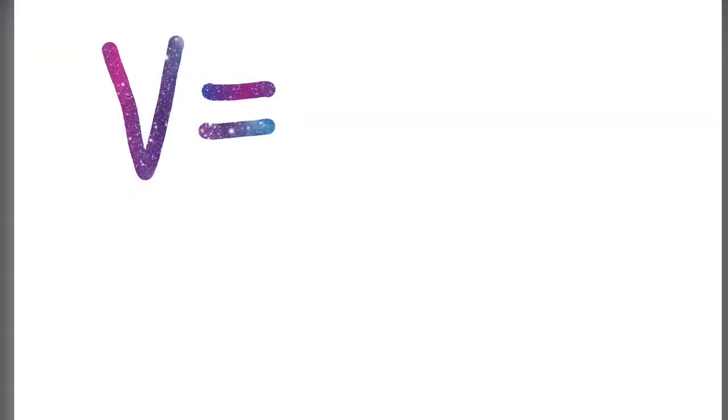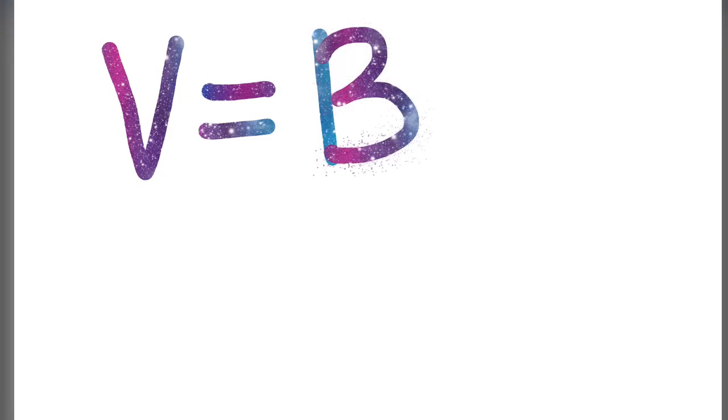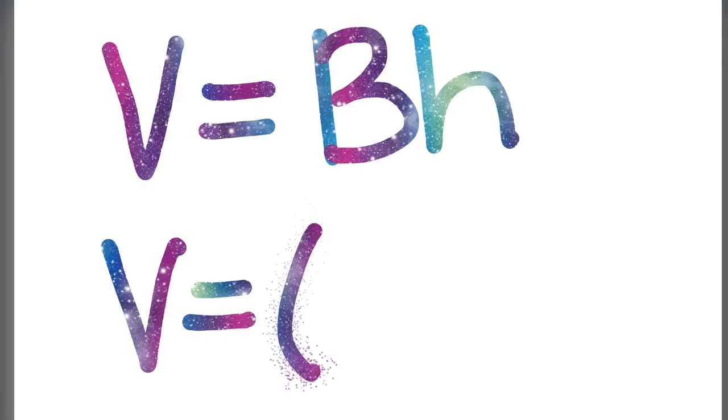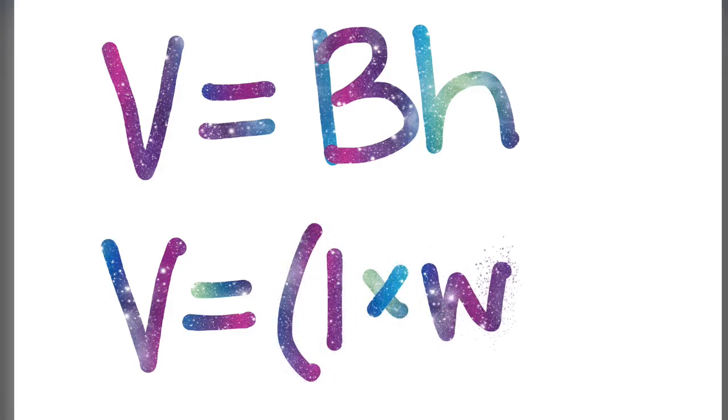So let's keep in mind that volume is big B, capital B, area of the base, times the height. Another way to think about this is to replace the big B by multiplying length times width times height.